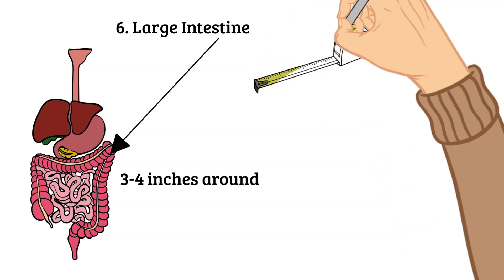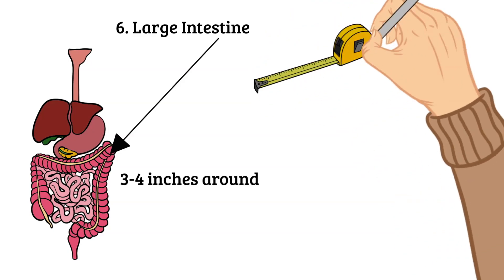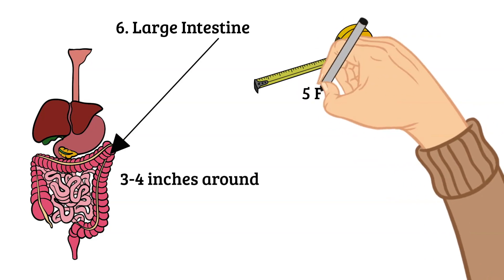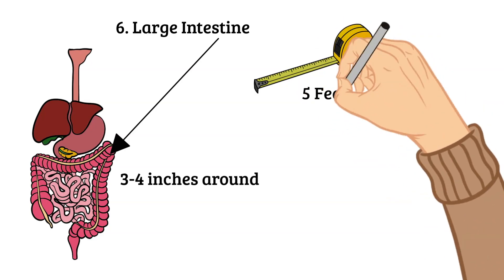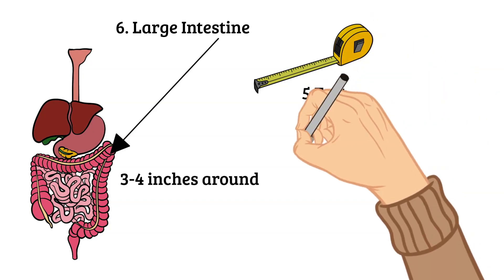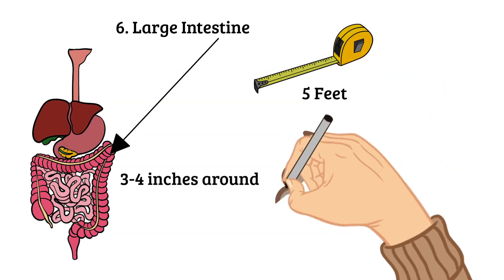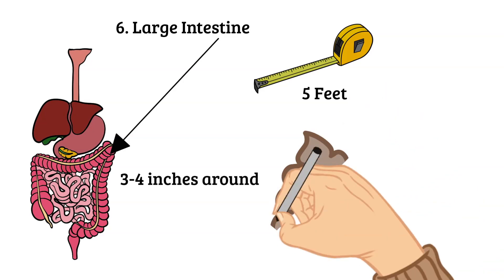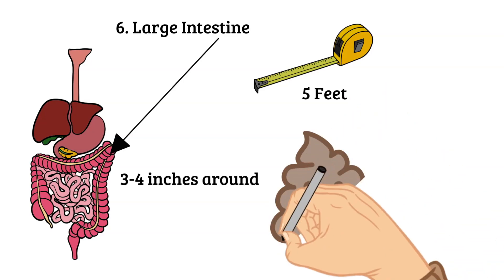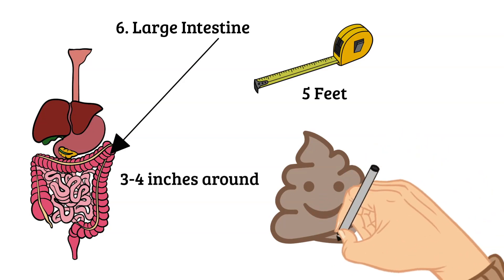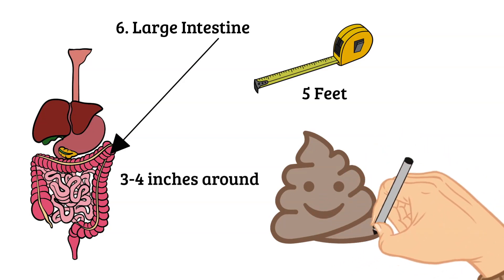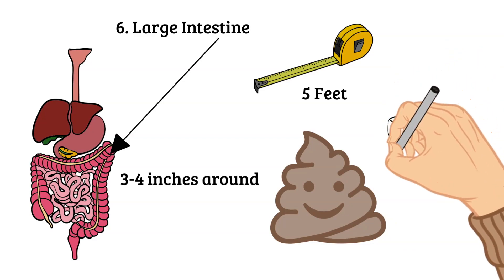After most of the nutrients are removed from the food mixture, there is waste left over. This is stuff your body can't use. This stuff needs to be passed out of the body, and the large intestine helps to prepare that leftover matter for being passed out of the body.